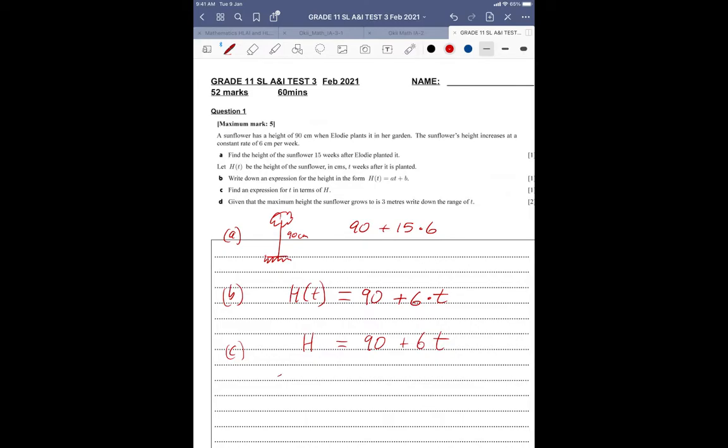You subtract 90 from both sides. Then you divide by 6. So your little working out should be. And the final part, D,